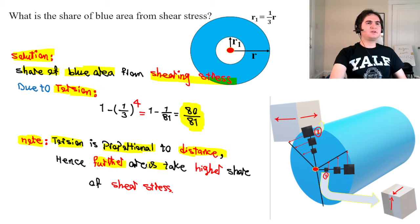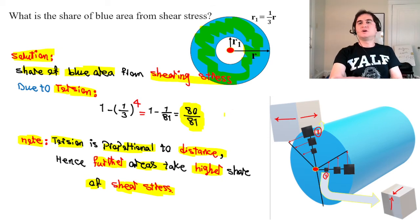Farther areas from center take much more higher shear stress. As you can see the rest of area goes by 80 over 81 share of torsion, almost getting all the share of shearing due to torsion.